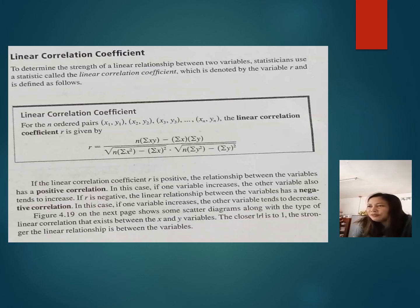Linear correlation coefficient. To determine the strength of a linear relationship between two variables, statisticians use a statistic called the linear correlation coefficient, which is denoted by the variable R.